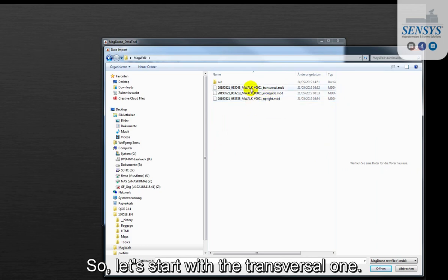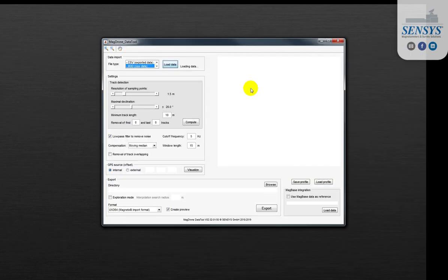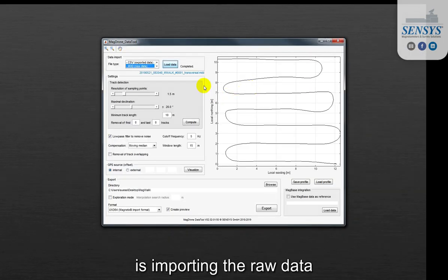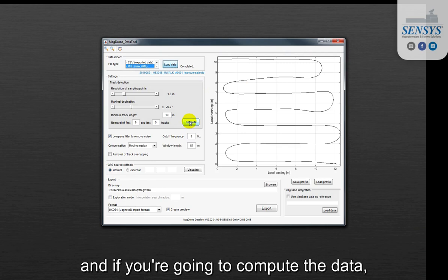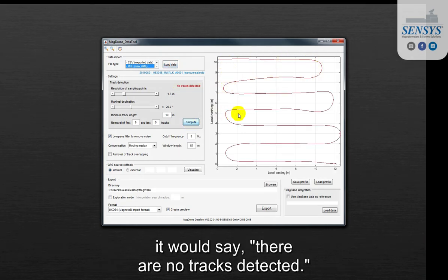So let's start with the transversal one. The MacDrone data tool is importing the raw data from the MacBlock and if you're going to compute the data it would say okay there are no tracks detected.